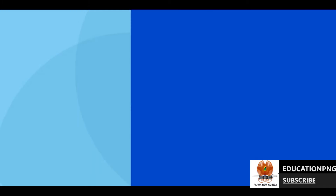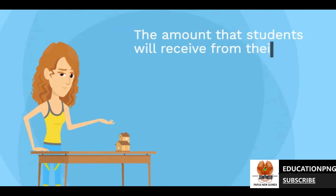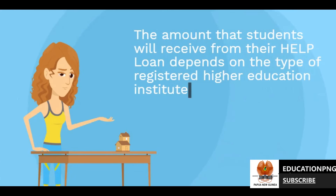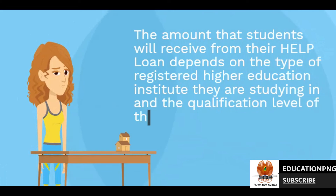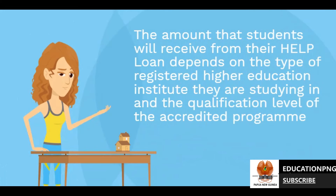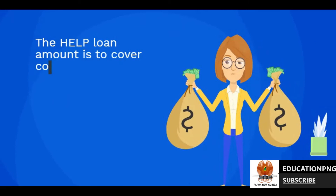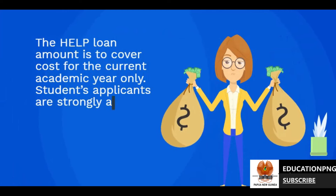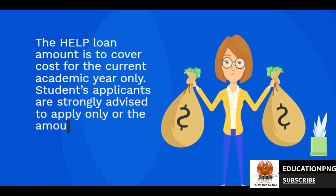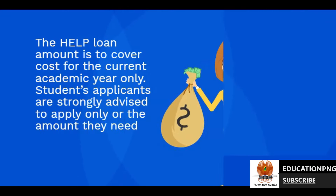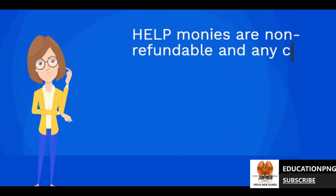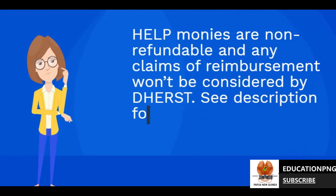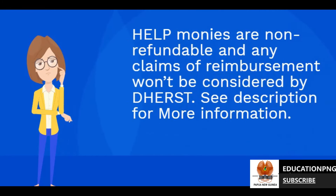Loan amount covered by the HELP Program: The amount that students will receive from their HELP Loan depends on the type of registered higher education institution they are studying in and the qualification level of the accredited program. The HELP Loan amount is to cover costs for the current academic year only. Student applicants are strongly advised to apply only for the amount they need. HELP monies are non-refundable and any claims of reimbursement won't be considered by DHERST.